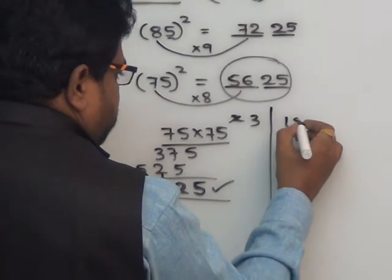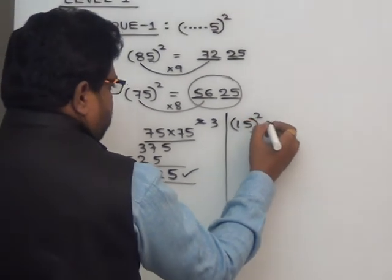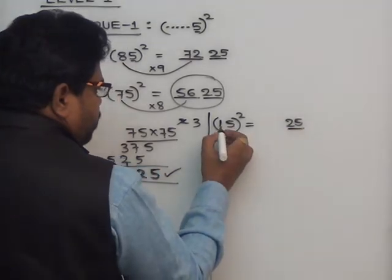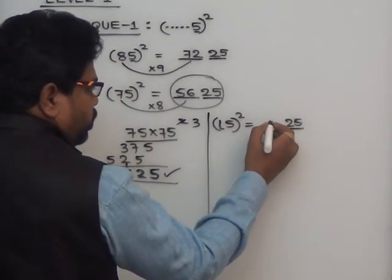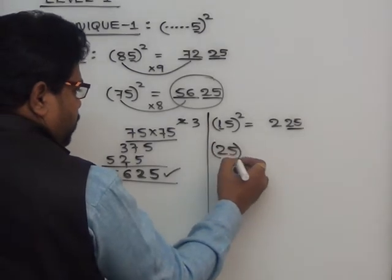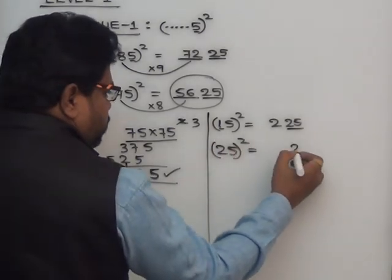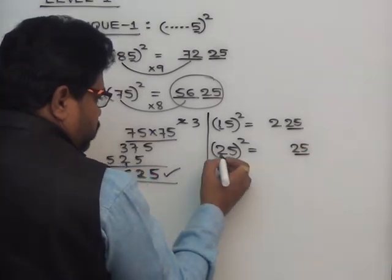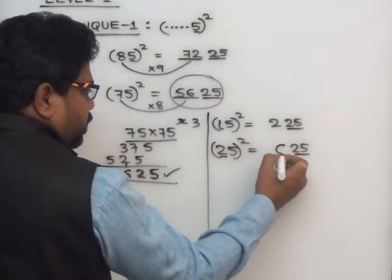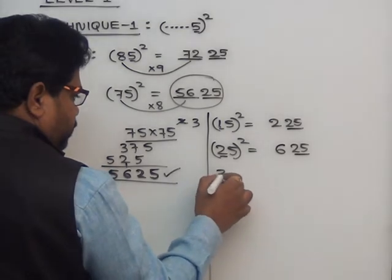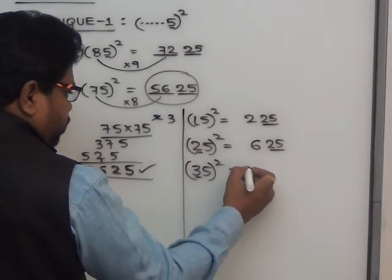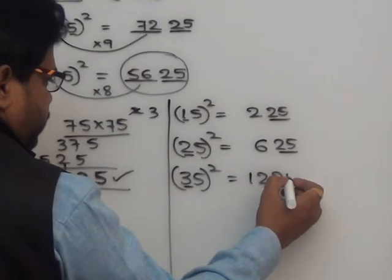So 15 square — last two digits are 25. Yekadha 1 undhikadha, immediate next number is 2. 1 into 2 equals 2. So 15 square is 225. 25 square — last two digits are 25. Yekadha 2 undhikadha, next number is 3. 2 into 3 equals 6. So 25 square is 625. 35 square — 3 undhikadha, 3 into 4 is 12. Answer is 1225.